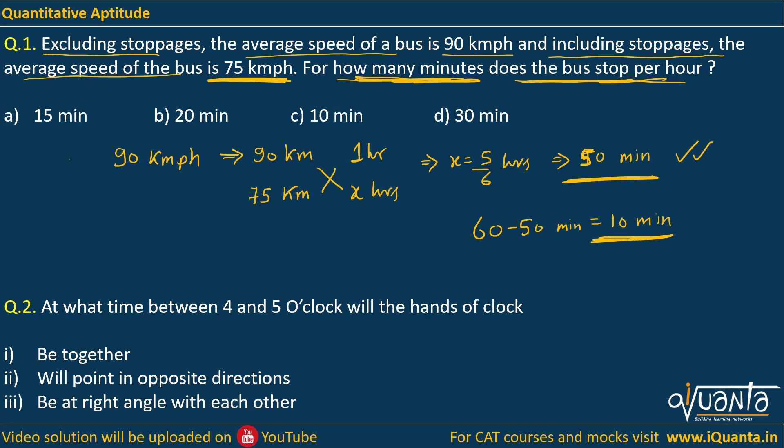Let us come to the second problem. Now it is based upon clocks. At what time between 4 and 5 o'clock will the hands of a clock be together? To calculate the angle between hands of a clock, we have a formula which is 5.5m minus 30h. m denotes the minutes, h denotes the hours.